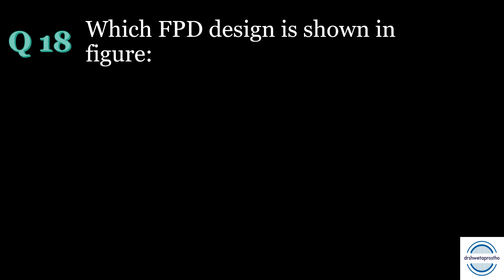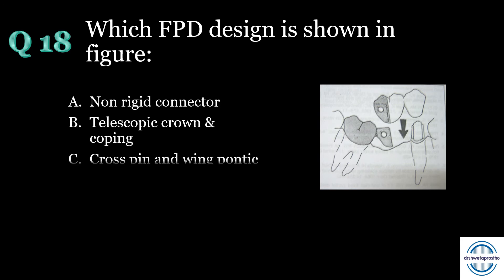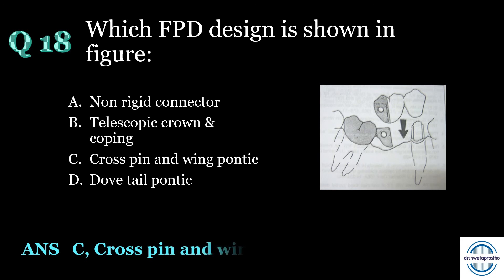Question number eighteen: Which FPD design is shown in the figure? A) non-rigid connector, B) telescopic crown and coping, C) cross spin and wing pontic, or D) dovetail pontic? The answer is C — cross spin and wing pontic. This is a special design used for tilted molars.